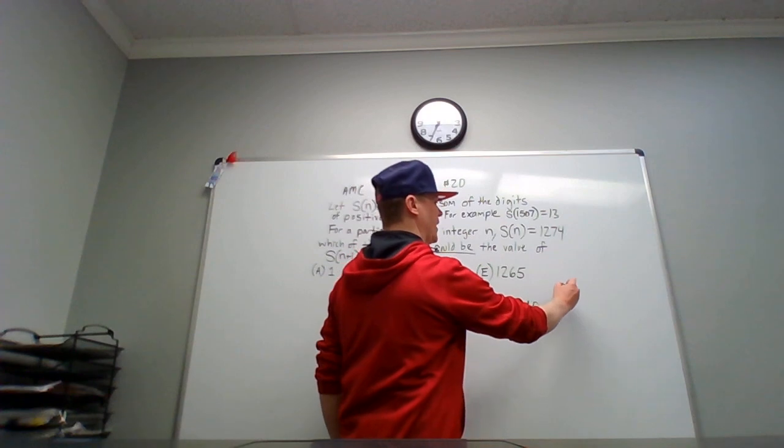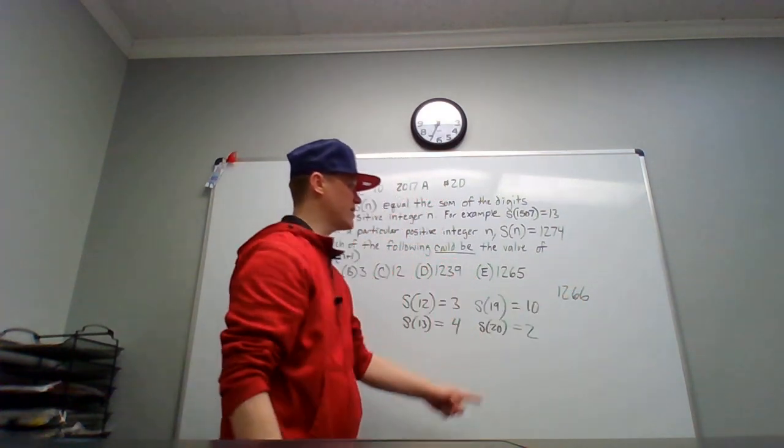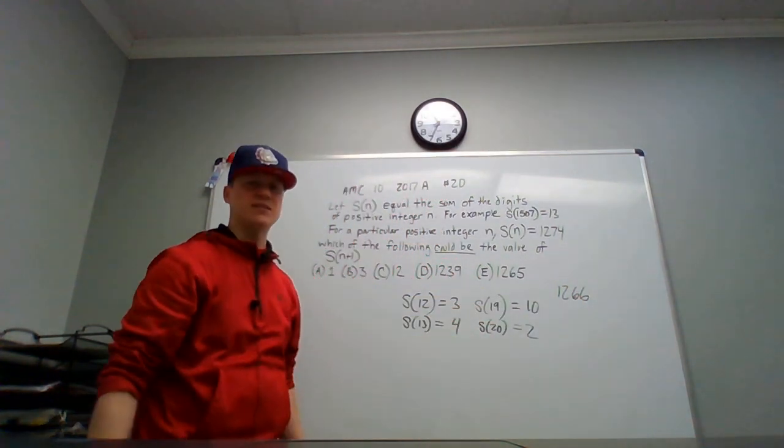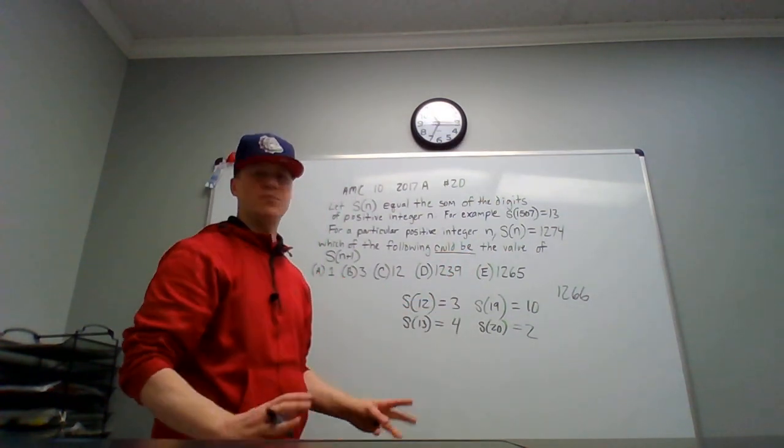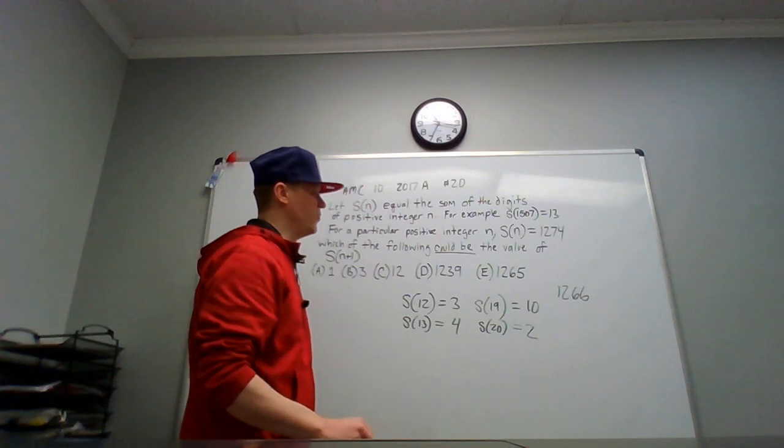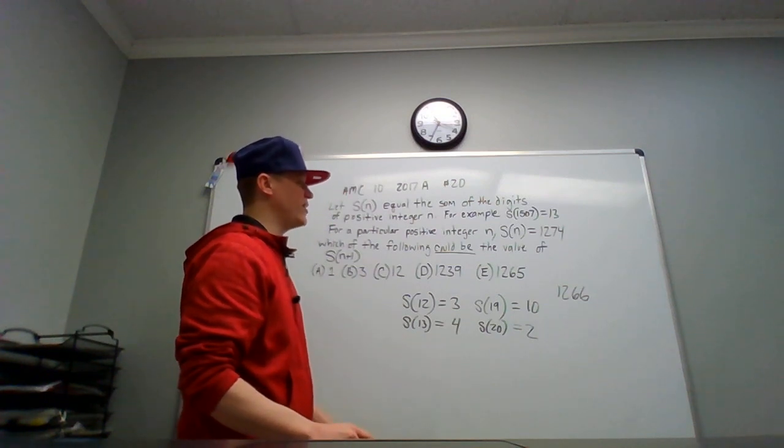Well that's close to 1265. Maybe we just circle E and think "oh maybe this is what happened." No, that's a bad strategy. What you want to do is figure out what happens if there were say two nines.